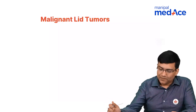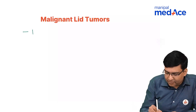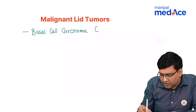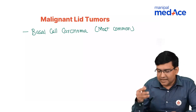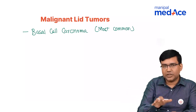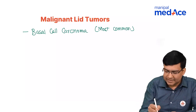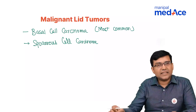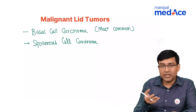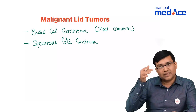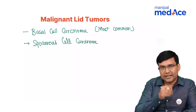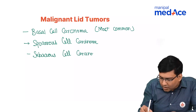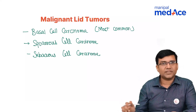Now we come to the malignant lid tumors. The three malignant lid tumors are: the most common one, basal cell carcinoma - remember this is the most common one. If they give a predisposing condition and ask about a malignant lid tumor, the most common is squamous cell carcinoma. The third one: if they say the lid tumor is in the upper eyelid and it is a 60-year-old female, the differential diagnosis is most commonly sebaceous cell carcinoma.